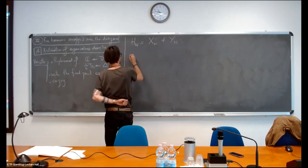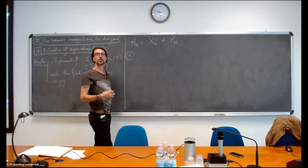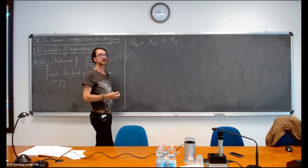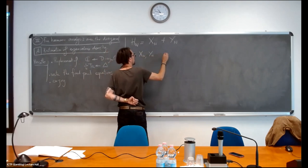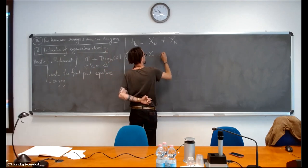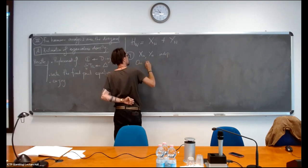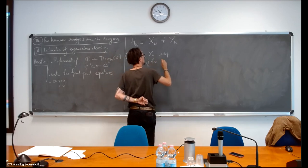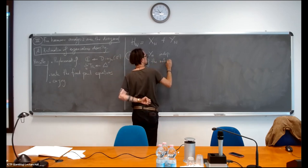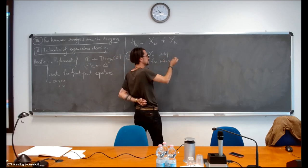Let me remind what happens in the case of free probability. We assume that X_n and Y_n are independent, and one of the matrices is unitarily invariant, or one of the matrices is a Wigner matrix — it's not entirely invariant, but it is asymptotically free.